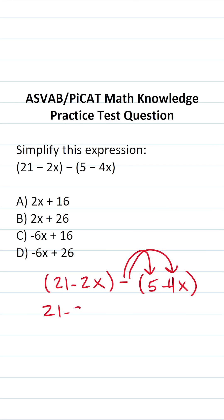So this is going to become 21 minus 2x, negative times positive 5. Again, a negative times a positive becomes a negative, so this becomes minus 5. Negative times negative 4. A negative times a negative is going to be a positive, so this becomes plus 4x.